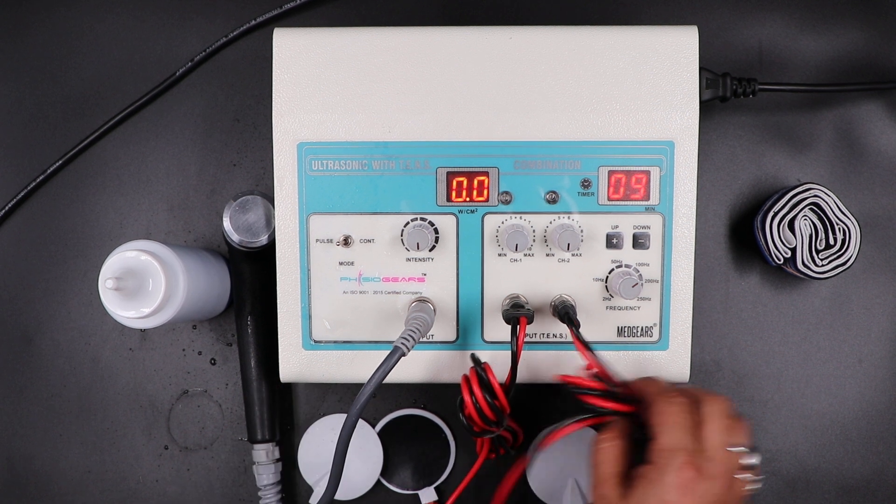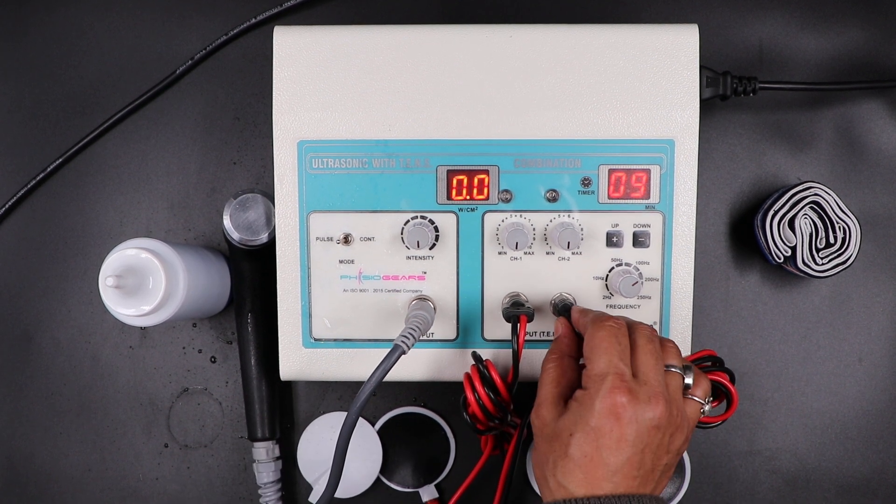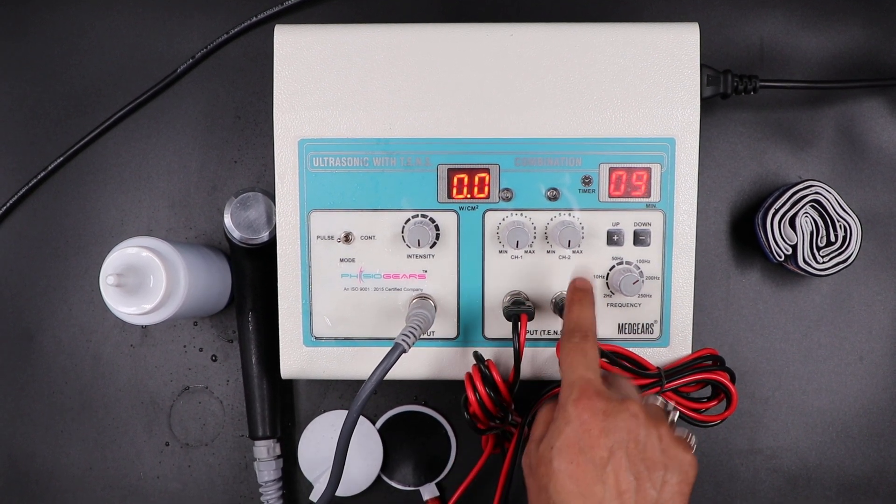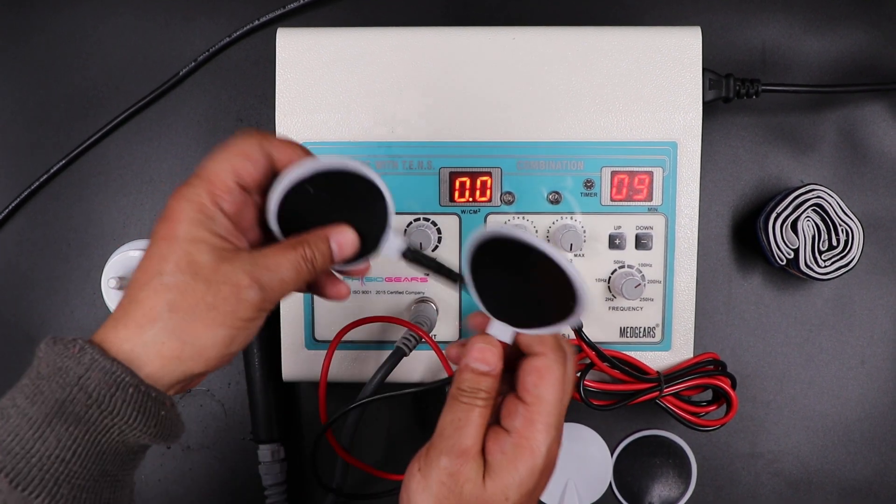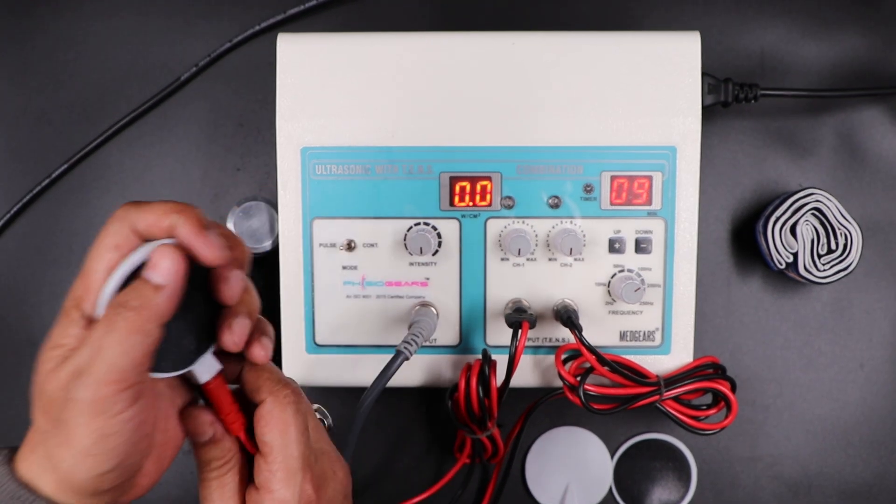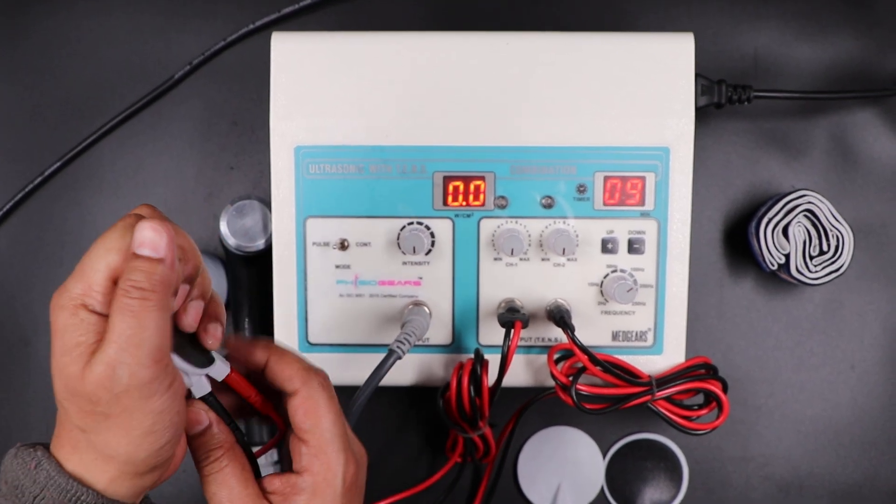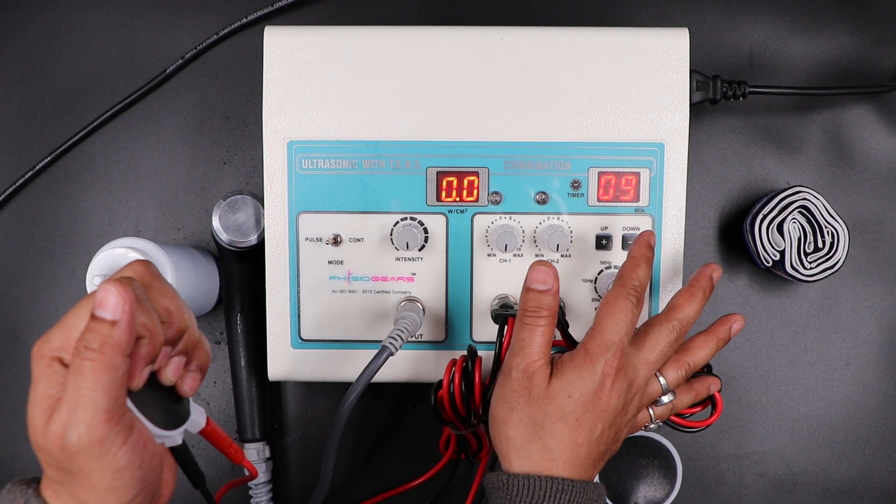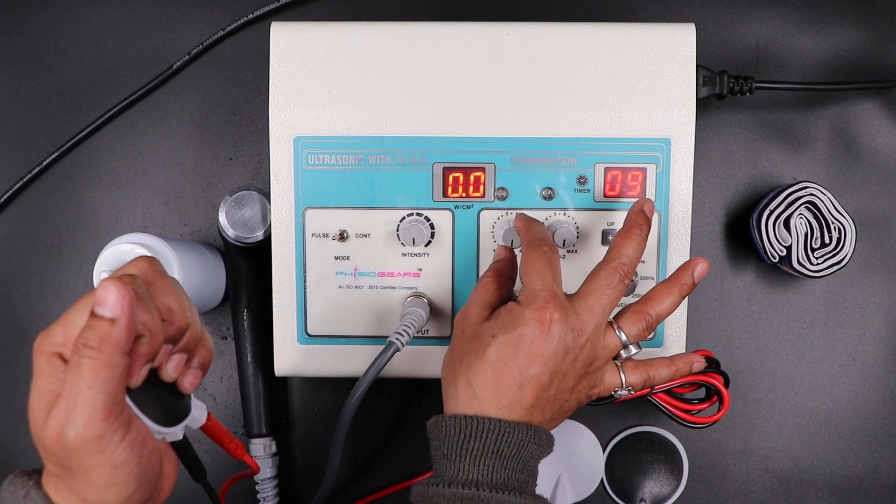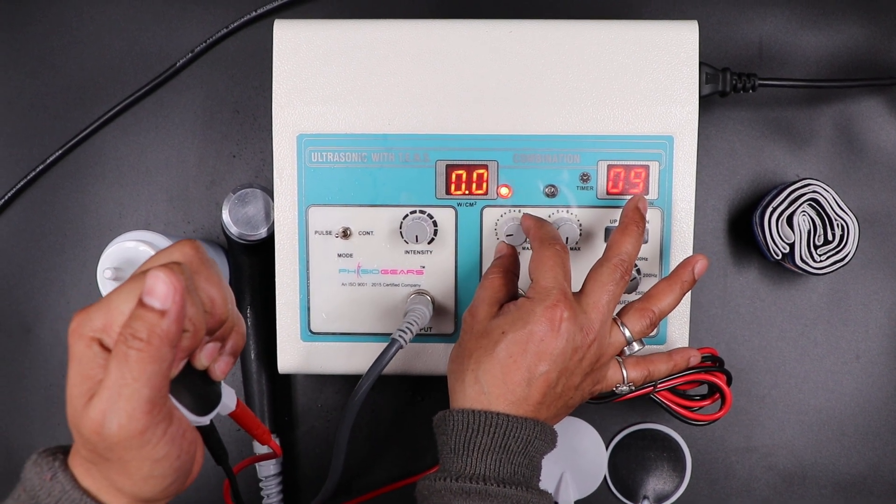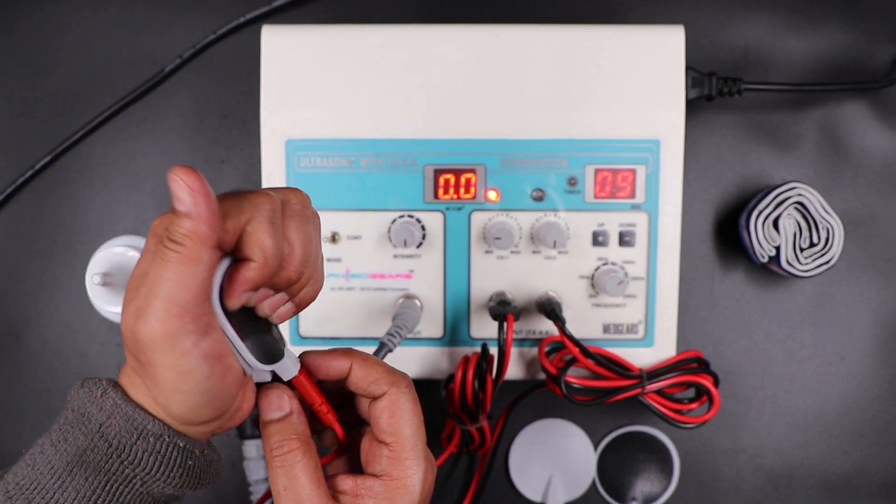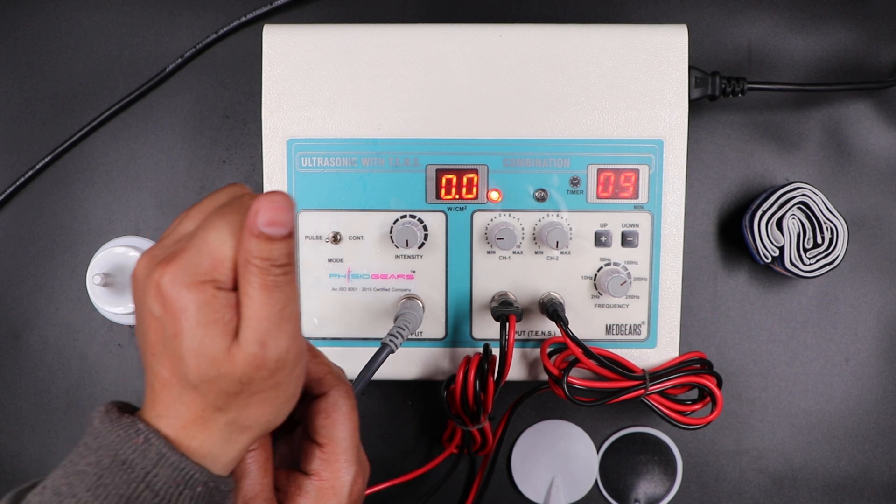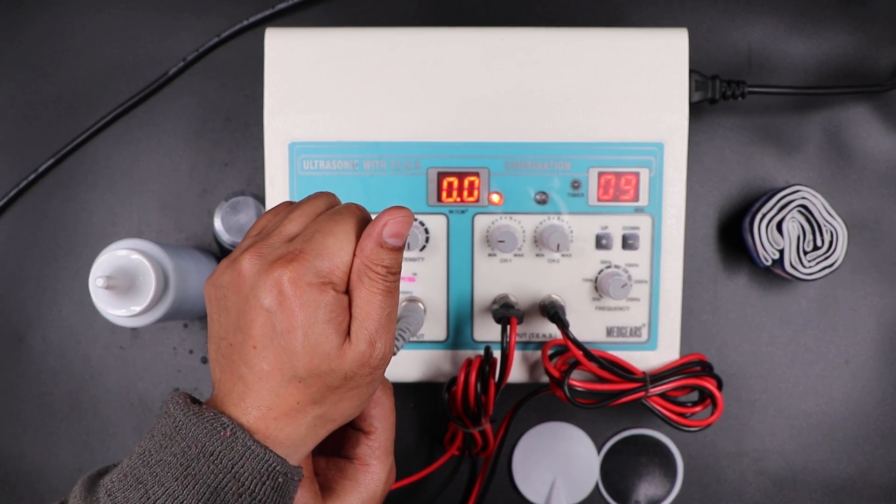Now we can check the TENS therapy. We already connected the two wires, channel 1 and channel 2. In channel 1 there are two electrode pads. Timer is same for both therapies. Just increase the intensity. Hold the pad on your palm like this for checking purposes. I'm feeling good sensation from the device.